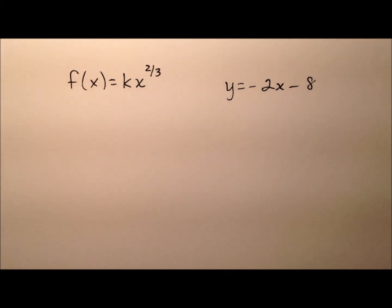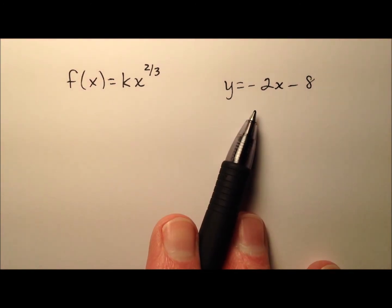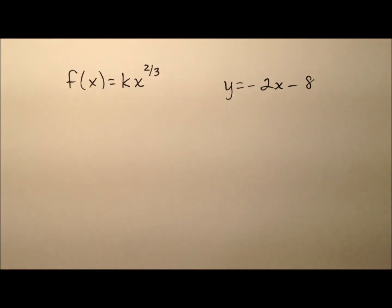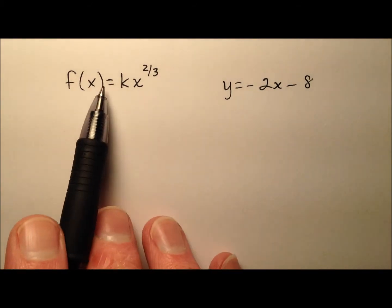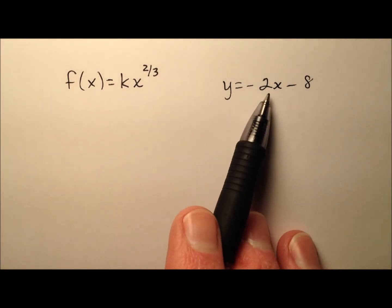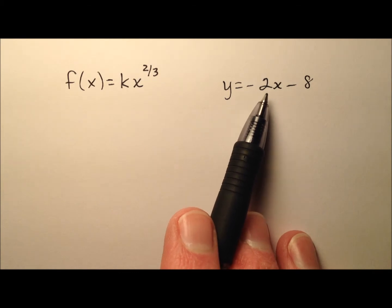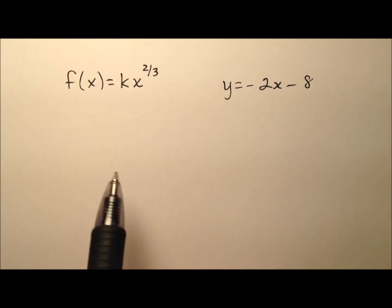In this example, we're going to find the value of k such that the line given by this equation is going to be tangent to the graph of the function. We know a couple of things for this to be true: this function and this line have to have one point of intersection — that's the point of tangency — and at that point of intersection, they have the same slopes.